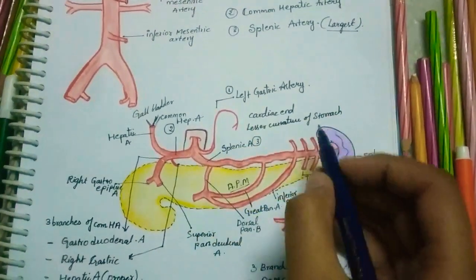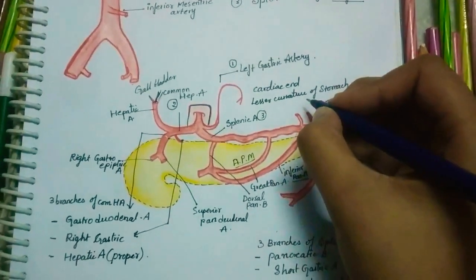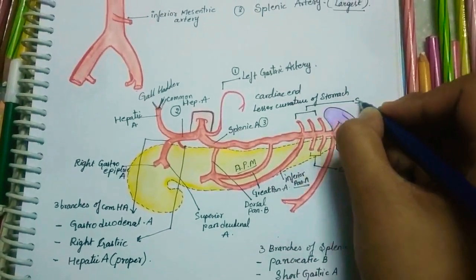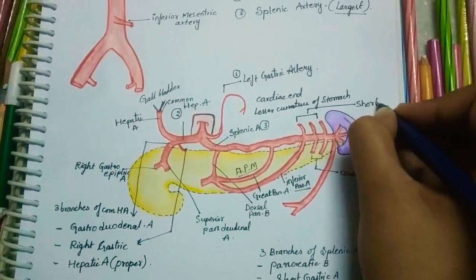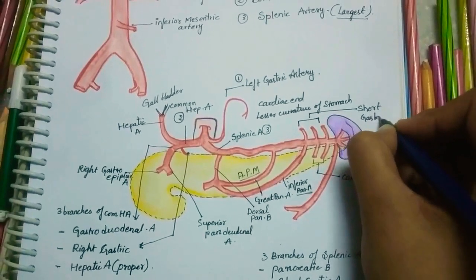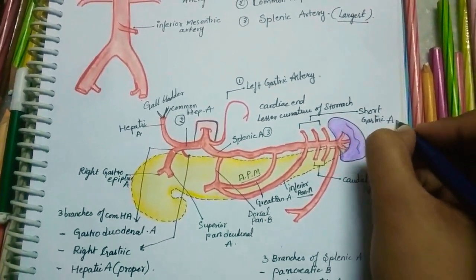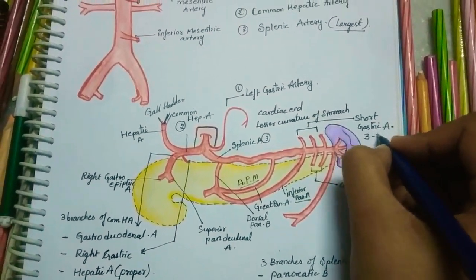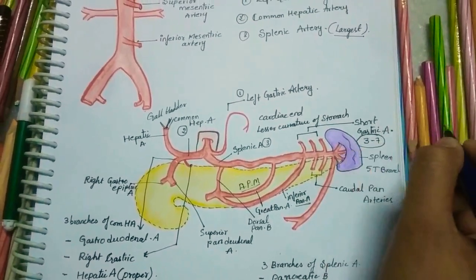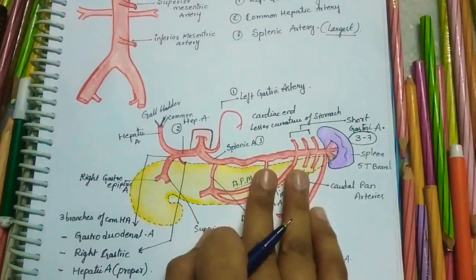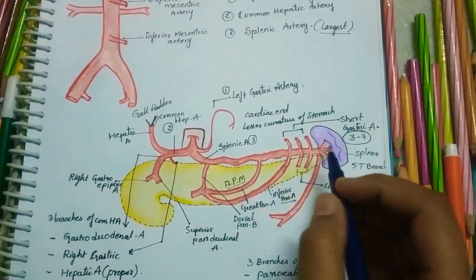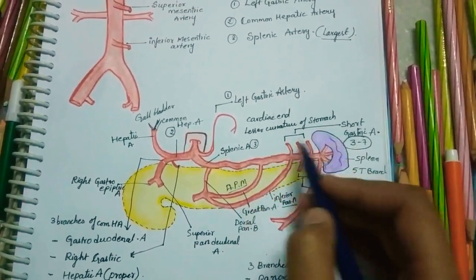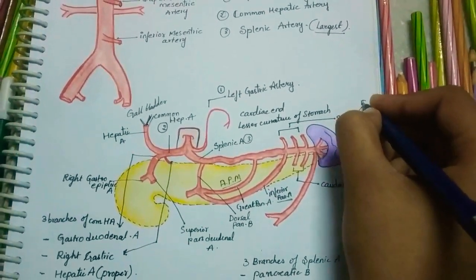The short gastric arteries are three to seven in number. They arise from the terminal part of the splenic artery and supply the fundus of the stomach.